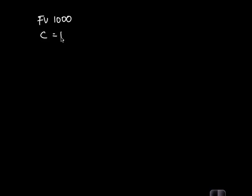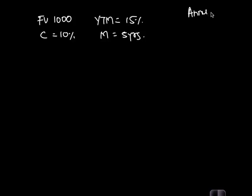First, how do you value a simple coupon bond? Let's say we have a bond with face value of 1000, coupon of 10%, YTM of 15%, and maturity of five years. Assuming annual compounding, on your calculator: FV = 1000, PMT = 100, I/Y = 15, N = 5. The valuation of the bond would be 832.